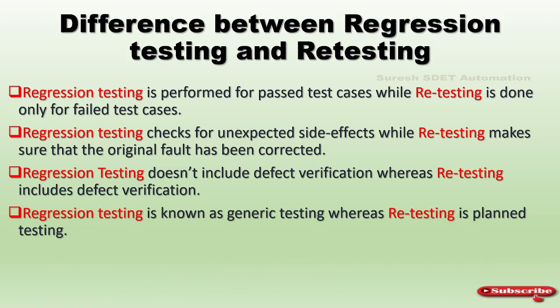Regression testing is known as generic testing, whereas retesting is planned testing. In generic testing, you get requirements, refer to reports and analytics, and design a proper test case suite — those test cases ensure your application is eligible to go live. Retesting is planned testing where you follow defined steps toward a specific goal, the best example being defect verification.